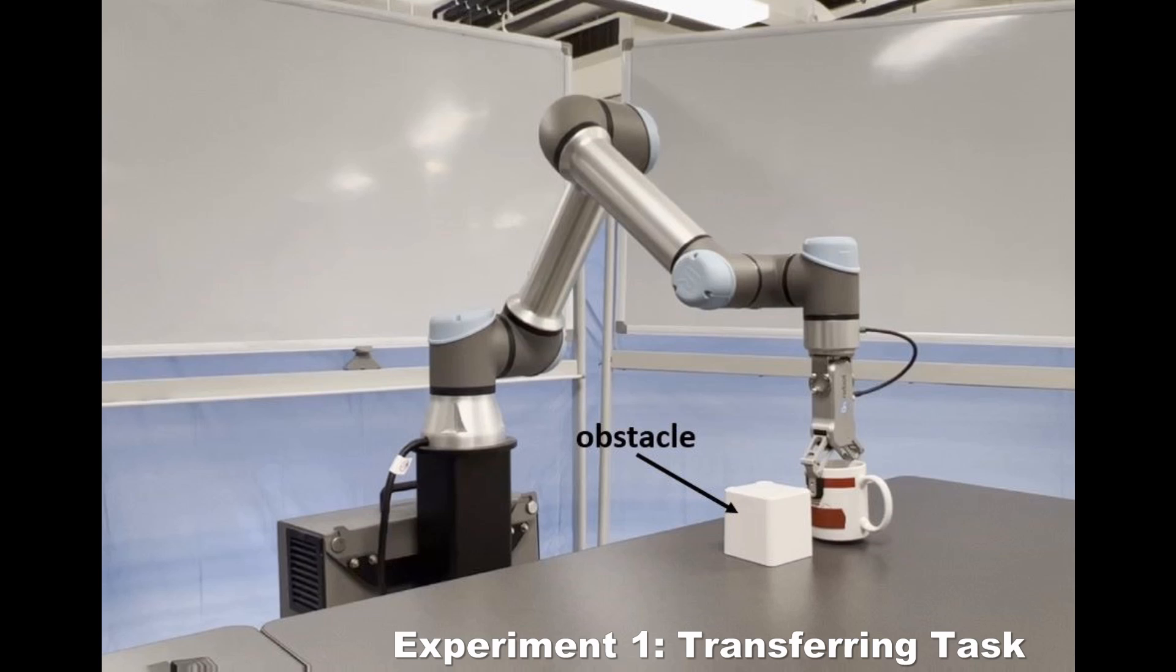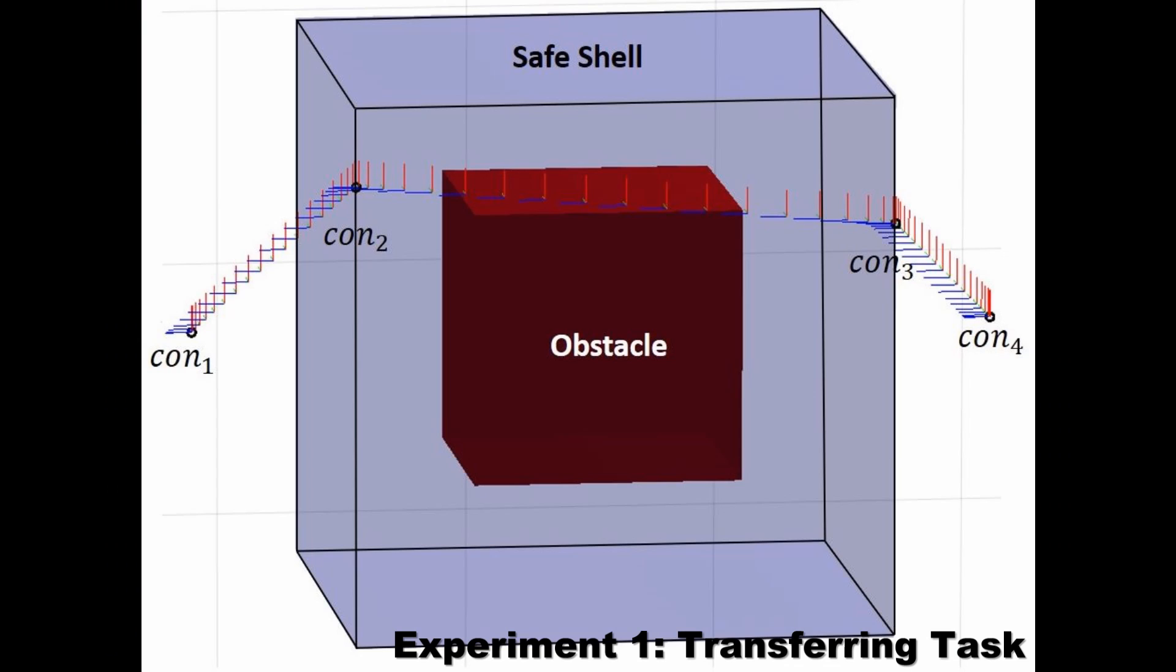In the first experiment, the end effector is required to transfer a cup of water while avoiding an obstacle. A safety protocol is given as a safety shell that the trajectory of the end effector cannot penetrate through. Knowing these constraints and the environment constraints, we can specify this transferring task with four critical configurations.